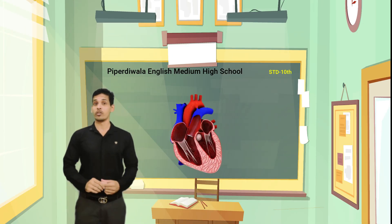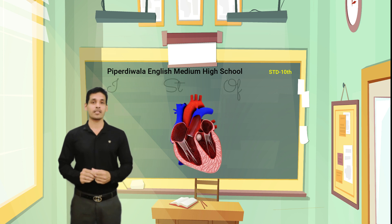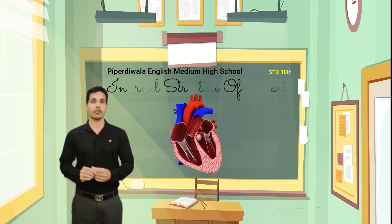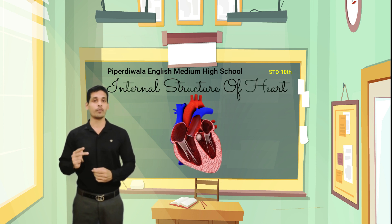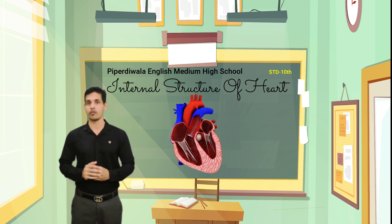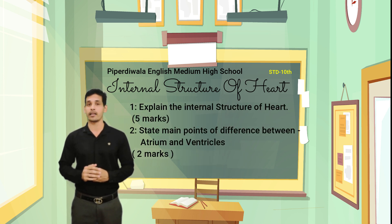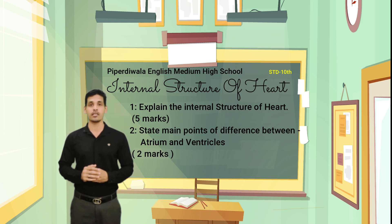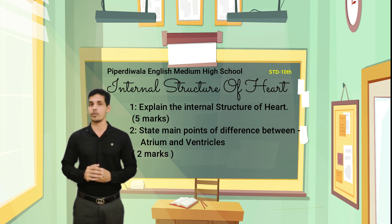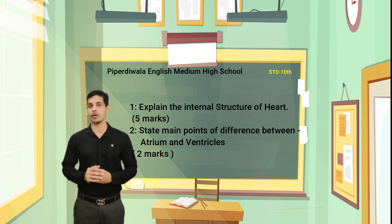Hello friends, today my topic is internal structure of heart and two main questions which are frequently asked in board examination. First, explain the internal structure of heart with diagram — it carries five marks. Second question is: state the main points of difference between atrium and ventricles — it carries two marks.